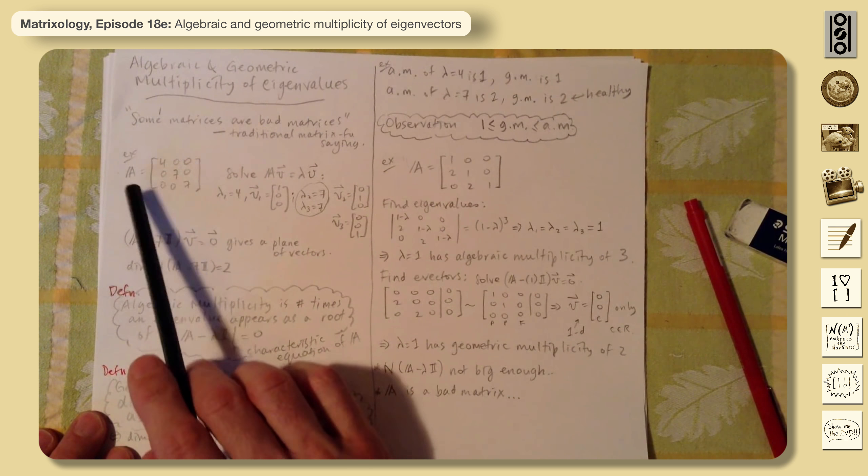And so we consider this to be kind of a good thing. This is a healthy matrix that has a full set of eigenvectors. So here are the terms. Algebraic multiplicity is the number of times an eigenvalue appears as a root of the characteristic equation, the determinant of A minus lambda I equals 0. And so here, the algebraic multiplicity of 4 is 1, of 7 is 2.